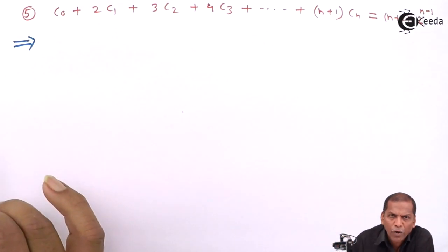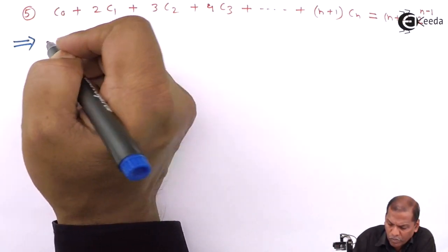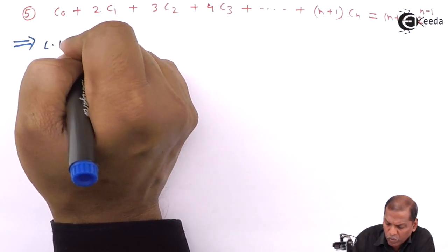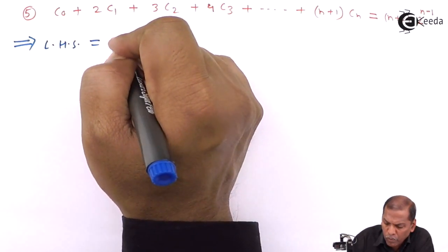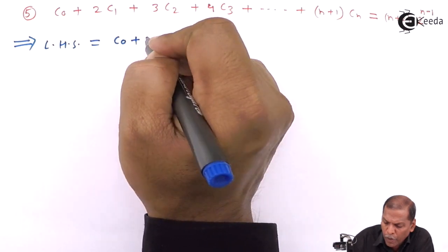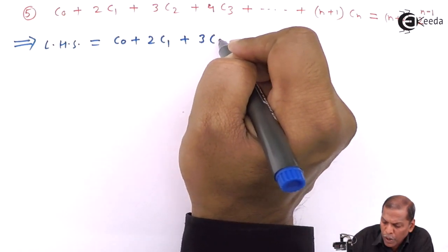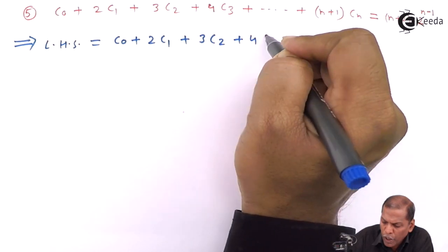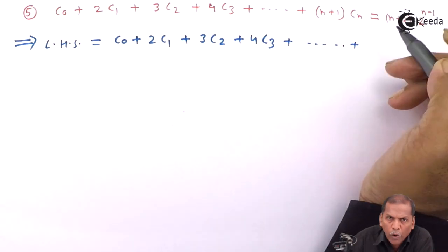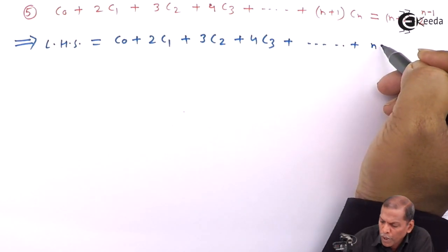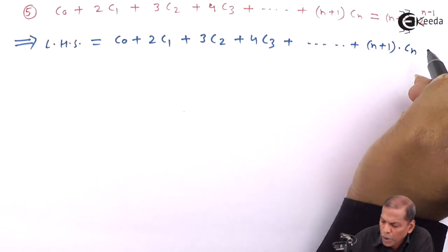Now we start from the LHS. The left hand side is equal to C₀ plus 2C₁ plus 3C₂ plus 4C₃, going on up to the last term (n+1)·Cₙ.